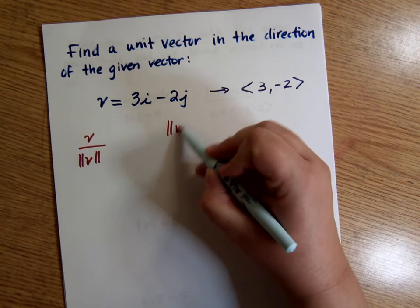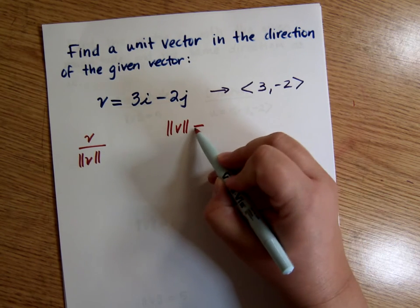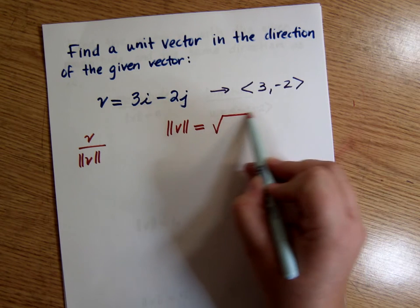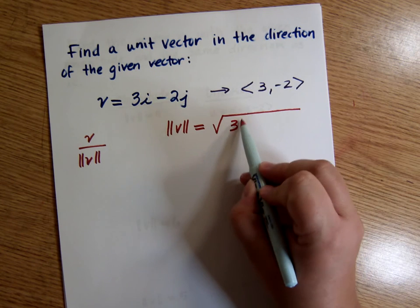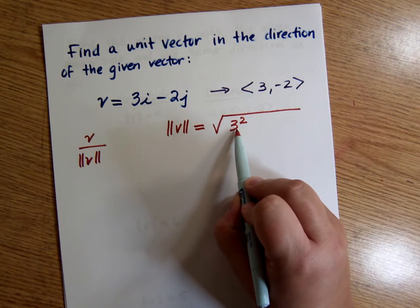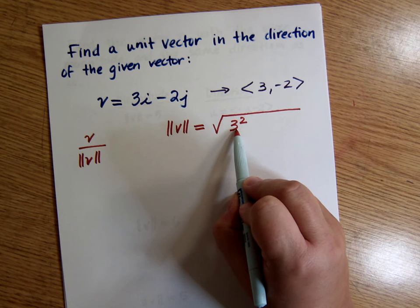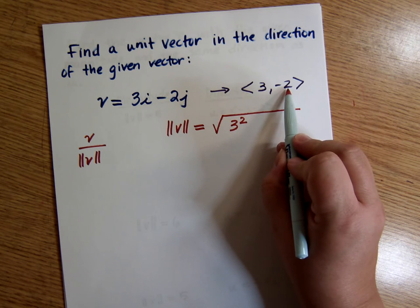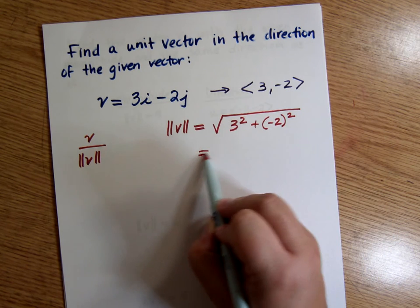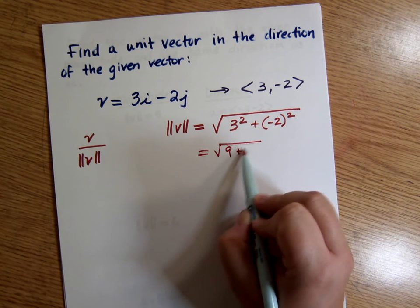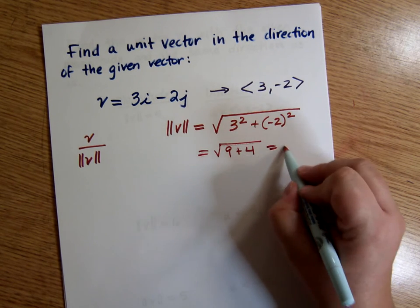The magnitude of the vector, remember, is its length. So thinking distance formula or Pythagorean theorem, if it's already in component form, this is the same as the difference between the x's. So it's just that squared. It's kind of like the side of a triangle in Pythagorean theorem. It's one of the legs. The other component is the other leg. So plus negative 2 squared. So this is 9 plus 4, which is square root of 13.